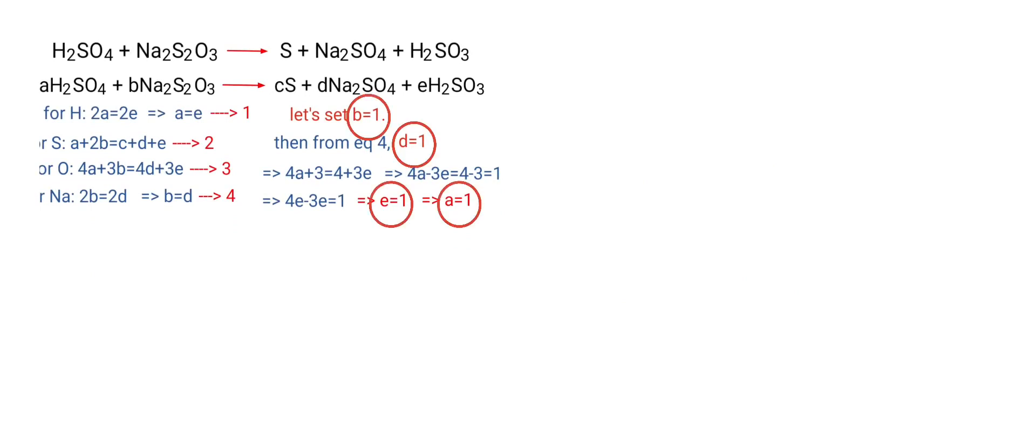Now apply A, B, D, and E values in equation 2. Then 1 plus 2 equals C plus 1 plus 1, so 3 equals C plus 2. Therefore C equals 3 minus 2, which equals 1.